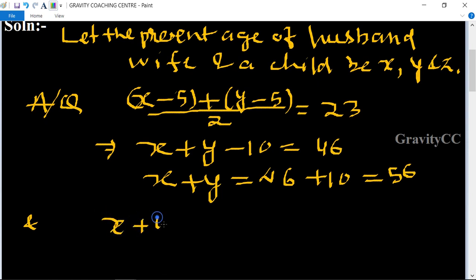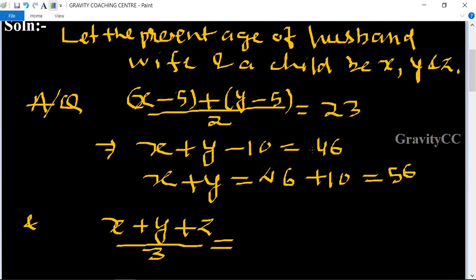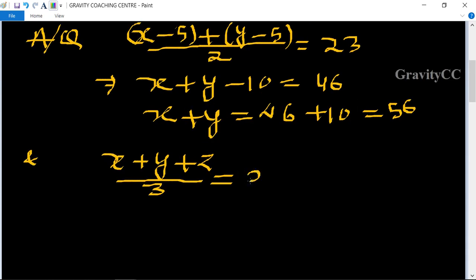...is equal to 20 years. So this implies that (x + y + z) / 3 = 20.